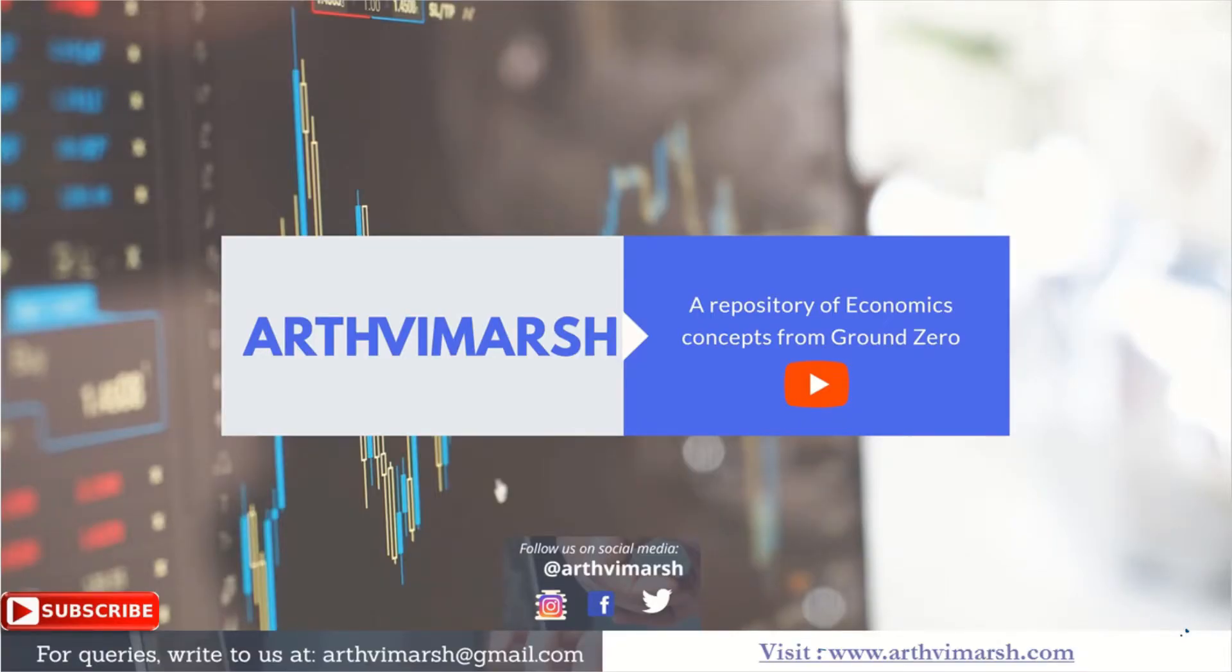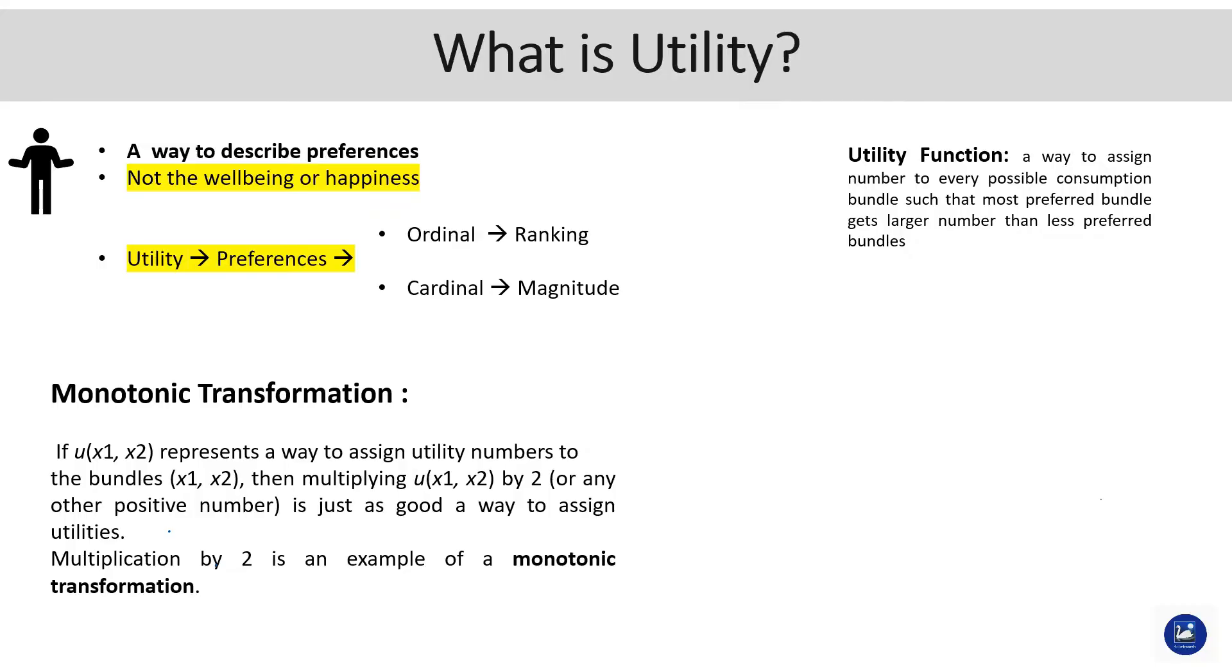Hello friends, welcome back. In case of cardinal utility, as we know, the magnitude plays a significant role. Considering the same preference ordering like we had in the previous case: your X bundle is preferred over Y, and your Y bundle is preferred over Z.